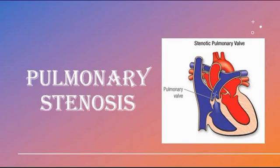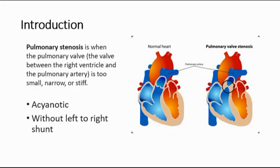Today I'm going to talk about pulmonary stenosis. It is when the pulmonary valve, which is the valve between the right ventricle and the pulmonary artery, becomes too small, too narrow or stiff. It is an acyanotic congenital heart disease and there is no left to right shunt.